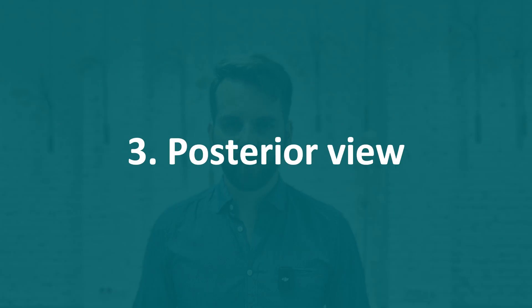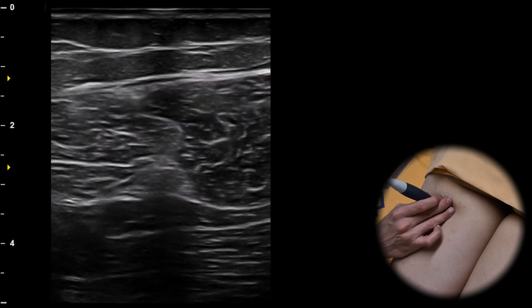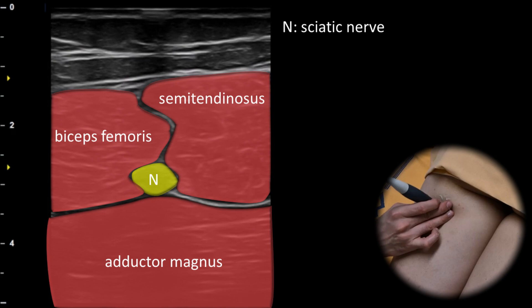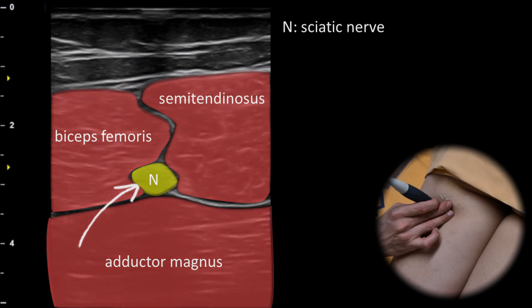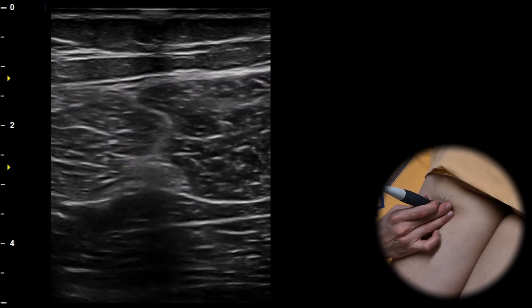The last view is the posterior view. In the transverse plane we first evaluate the individual muscles of the posterior thigh. At the deepest level we can assess the adductor magnus. Laterally we can evaluate the biceps femoris muscle, while medially we can assess the semitendinosus muscle. Positioned between these three muscles is the sciatic nerve. This appearance resembles a windmill, giving rise to the metaphorical term windmill sign.